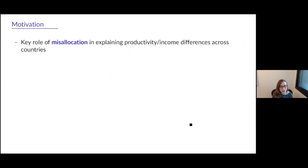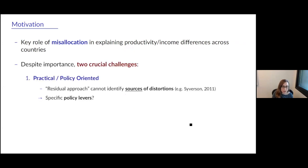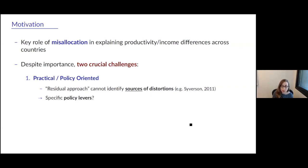The motivation for this paper comes from the fact that the misallocation of inputs like capital and labor plays an important role in explaining differences in productivity and income across countries. But despite the importance of this misallocation for economic development, the literature on misallocation faces two crucial challenges.